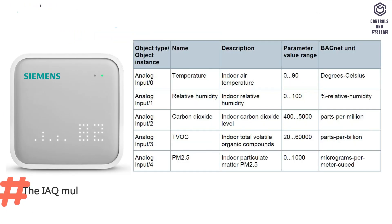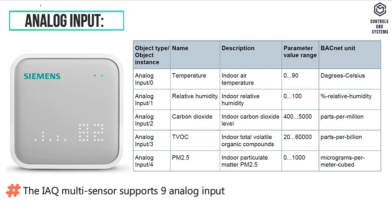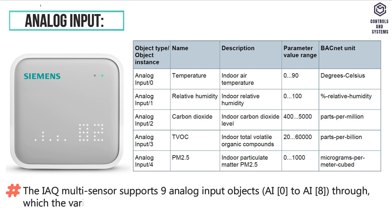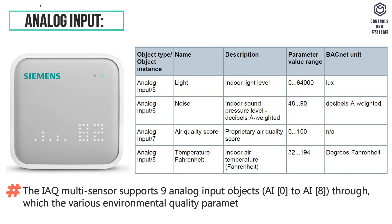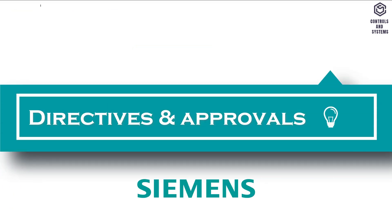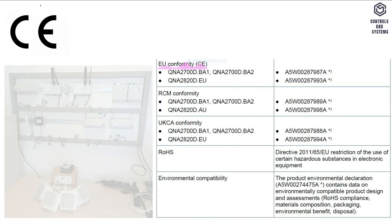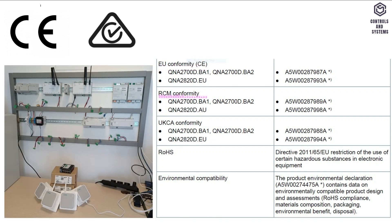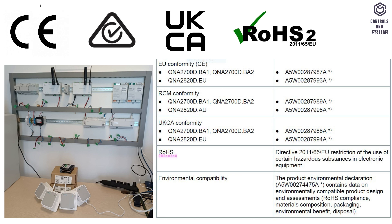The IAQ Multisensor supports 9 analog input objects, AI0 to AI8, through which the various environmental quality parameter measurements can be read out by a BACnet client. Directives and approvals include: European Conformity (CE), Regulatory Compliance Mark (RCM), UK Conformity Assessed (UKCA), and Restriction of Hazardous Substances (RoHS).